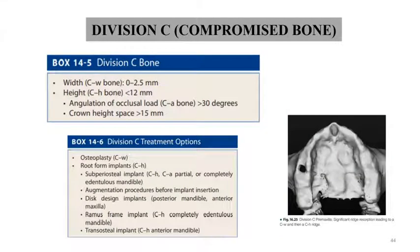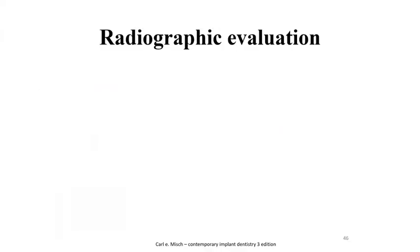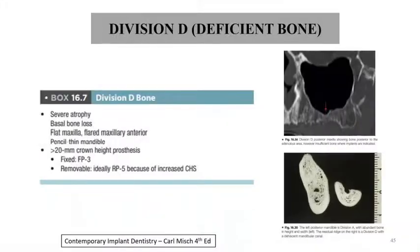Division C is compromised bone; measures such as osteoplasty, root form implants, or augmentation procedures can be used to increase bone width. Division D is deficient bone with severe atrophy and a flat maxilla, where ridge augmentation is essential.